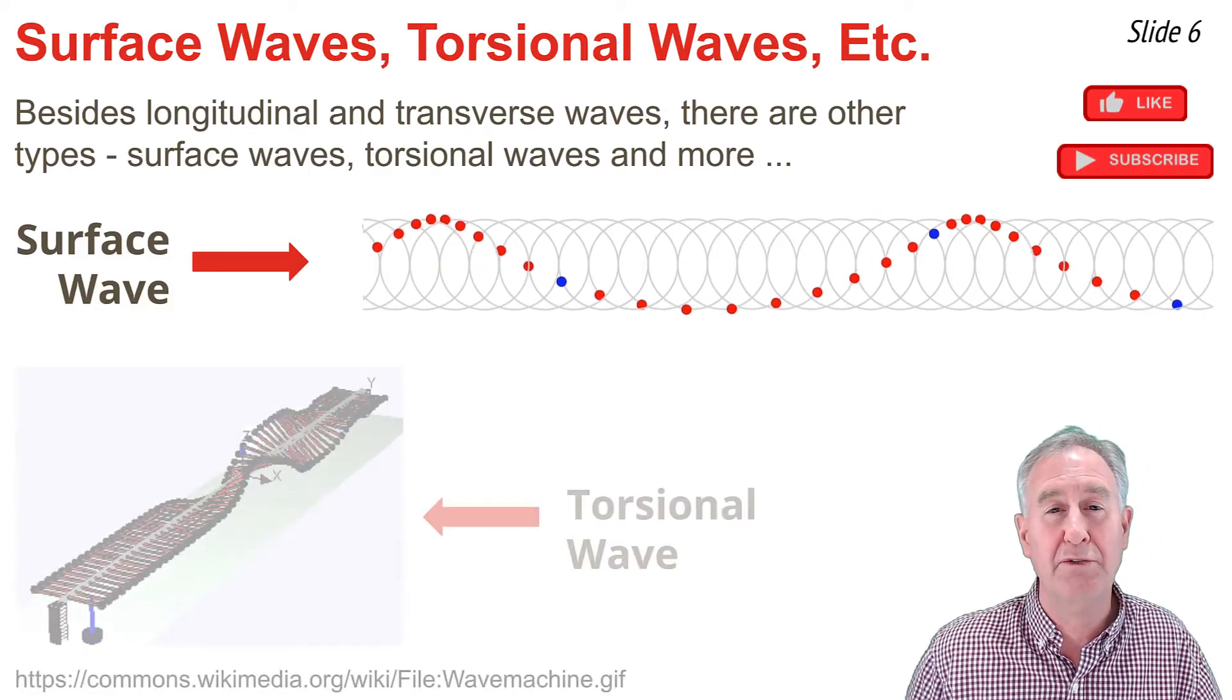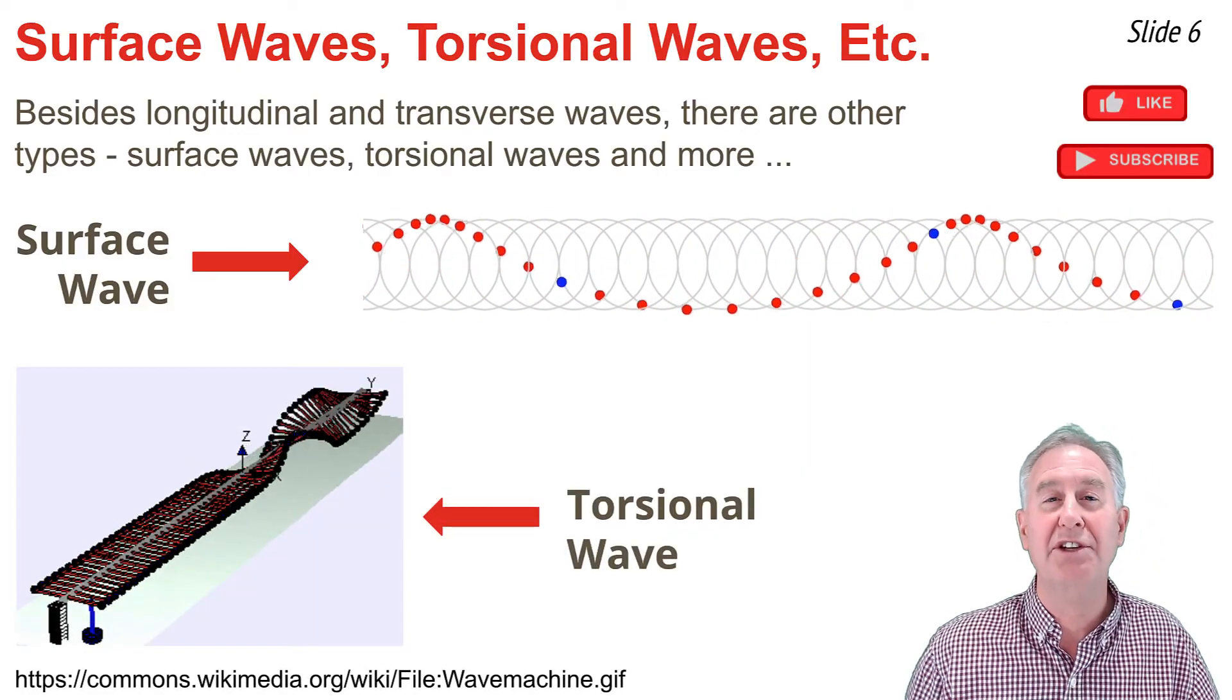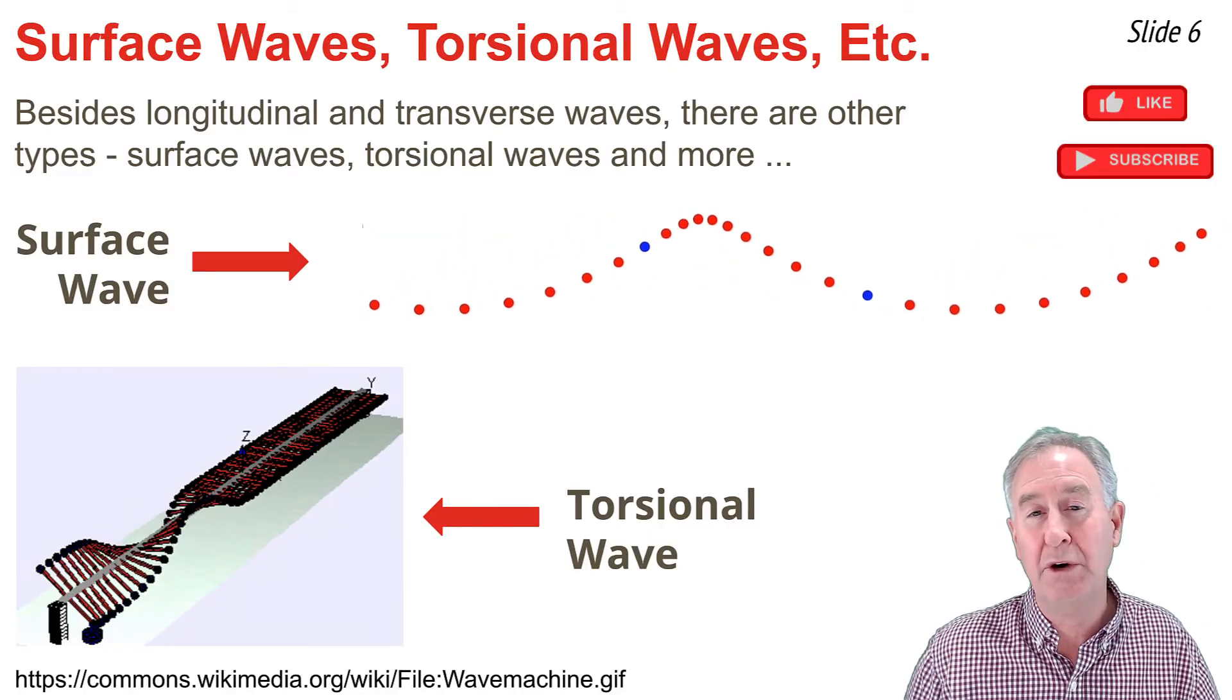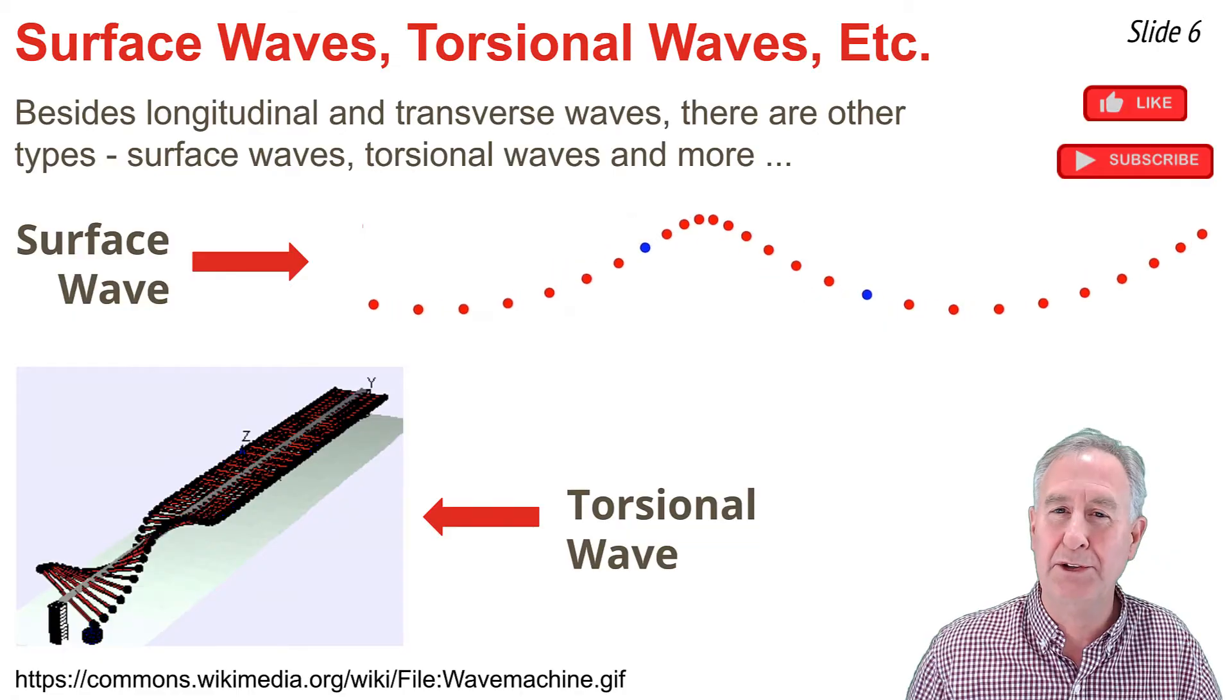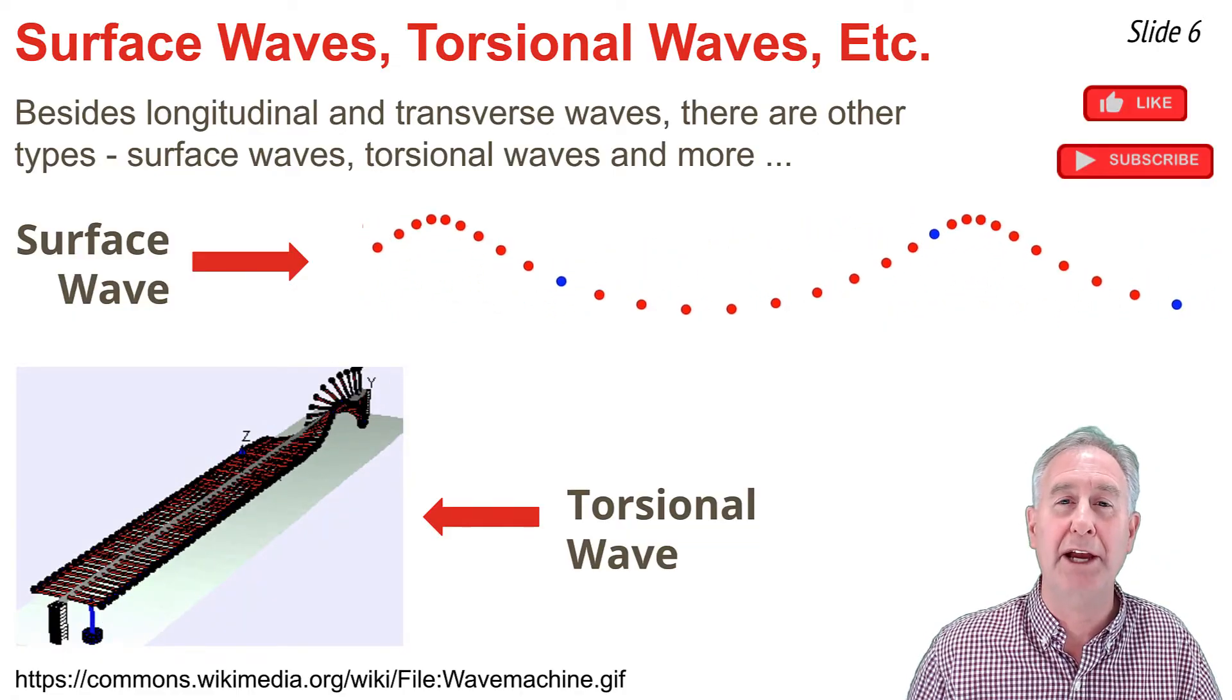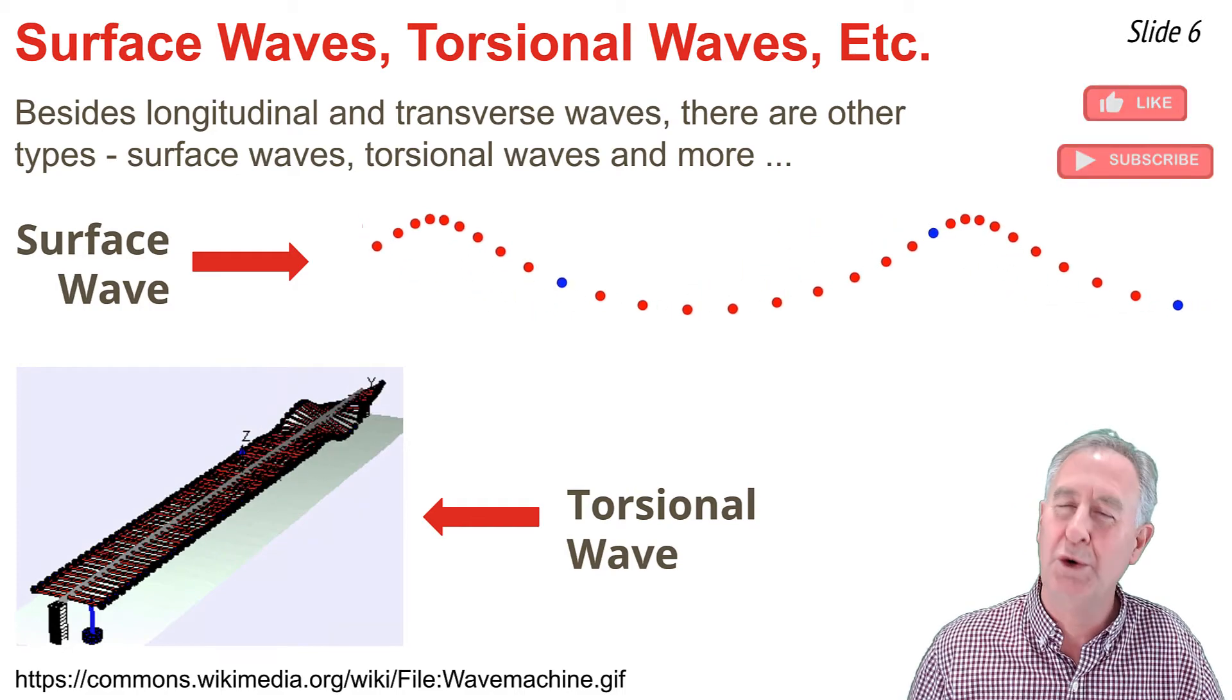Many physics labs have a wave machine that consists of a collection of steel rods that are resting upon a horizontal support. You can introduce a pulse into one of the ends and watch it travel back and forth in a manner as shown here. And this is what we would call a torsional wave.